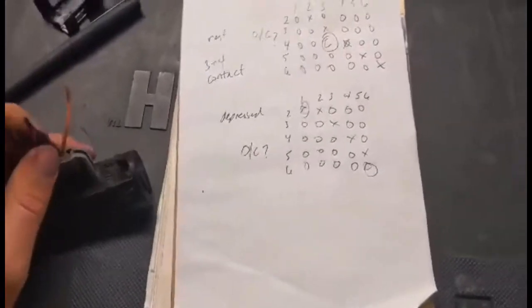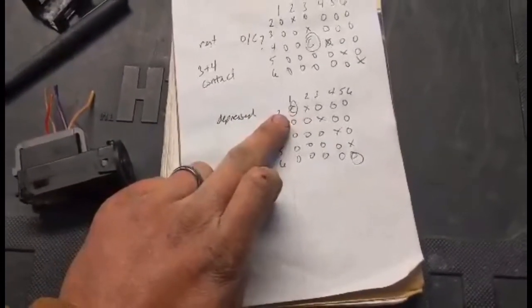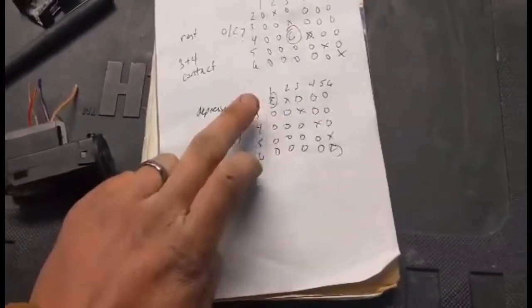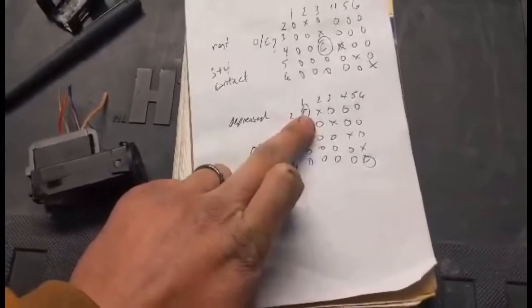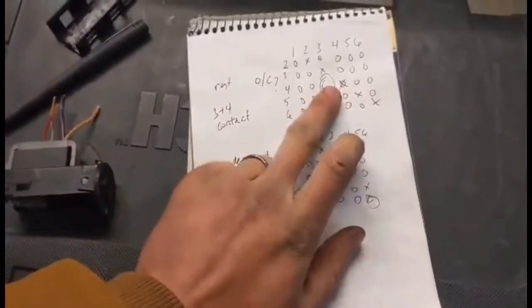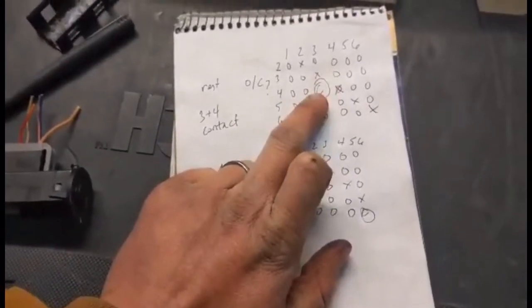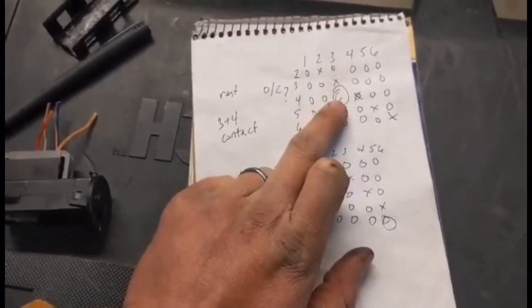And what I'm figuring is obviously when one and two have continuity, the truck can turn the key and start. When one and two don't have continuity, you turn the key, the truck won't do anything. It doesn't think your foot's on the clutch. Three and four in the resting position, your foot's not on the clutch, and these are what's telling cruise control whether or not it can run.